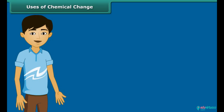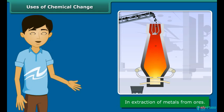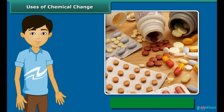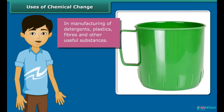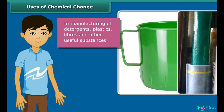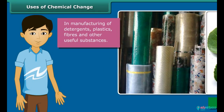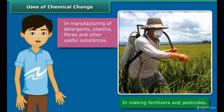Do you know the importance of chemical changes in our life? Chemical changes are useful in extracting metals from ores, manufacturing medicines, and producing artificial and useful substances like detergents, plastics, fibers, fertilizers, and pesticides for agricultural purposes.